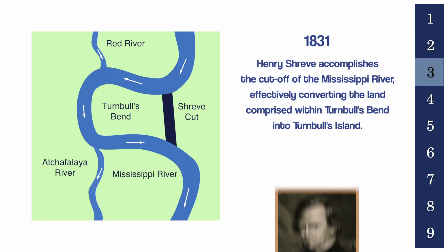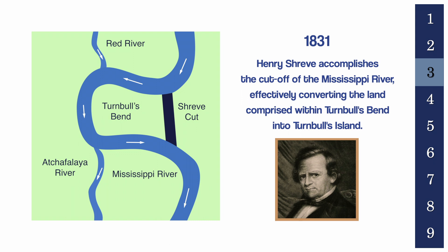In 1831, Henry Shreve accomplished the cutoff of the Mississippi River, effectively converting the land comprised within Turnbull's Bend into Turnbull's Island.